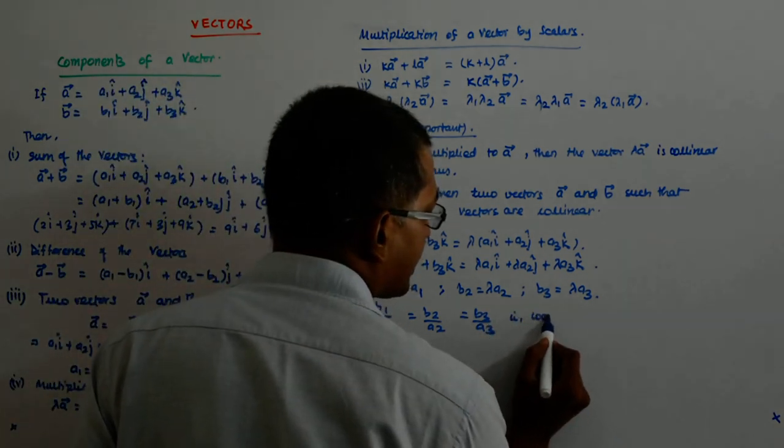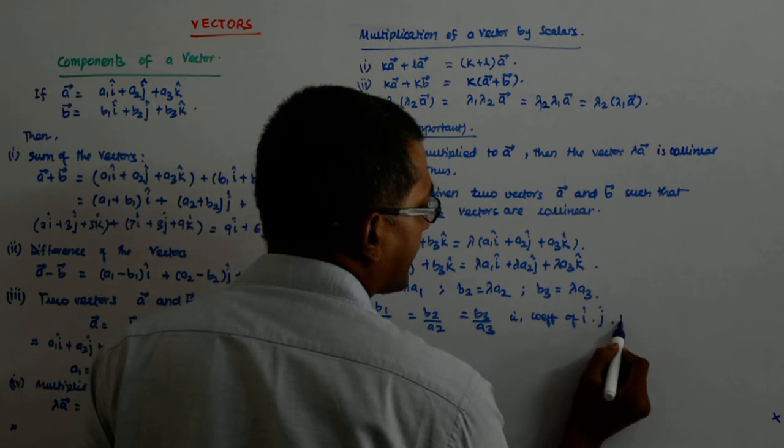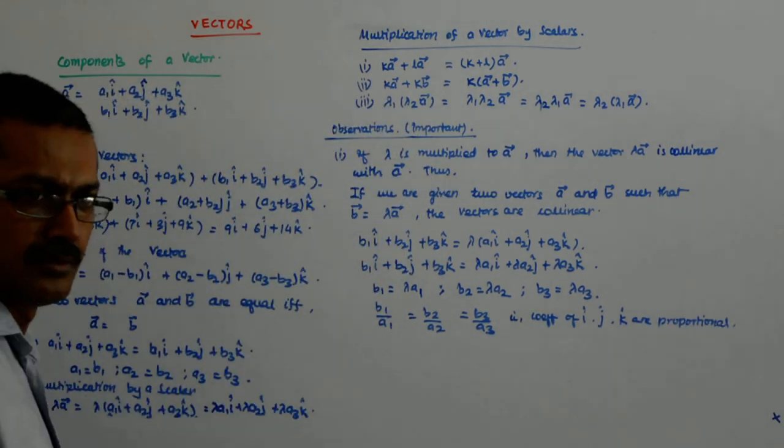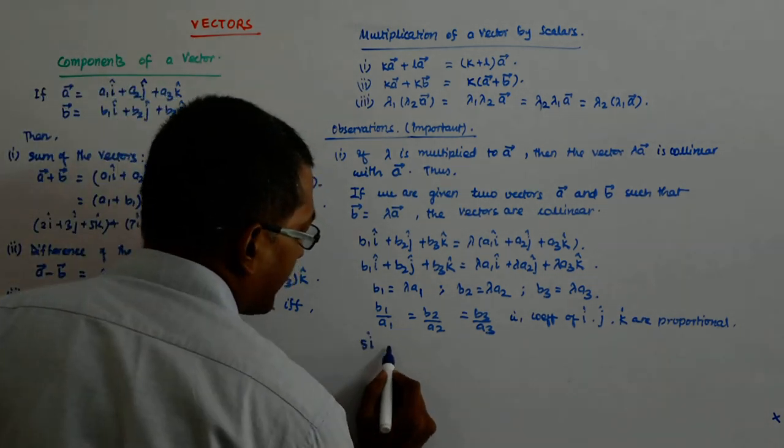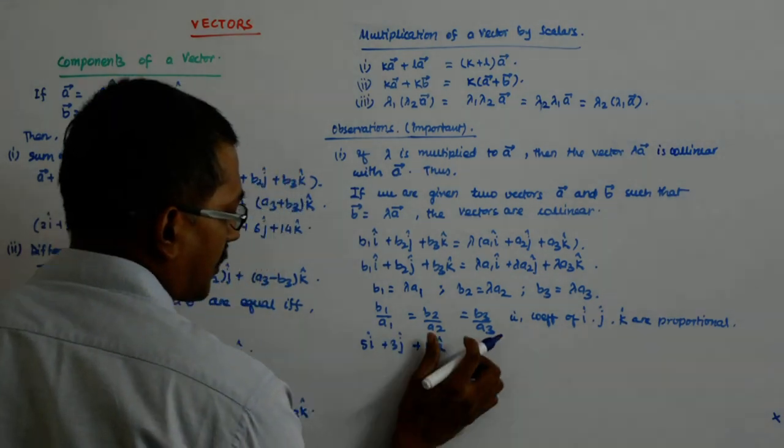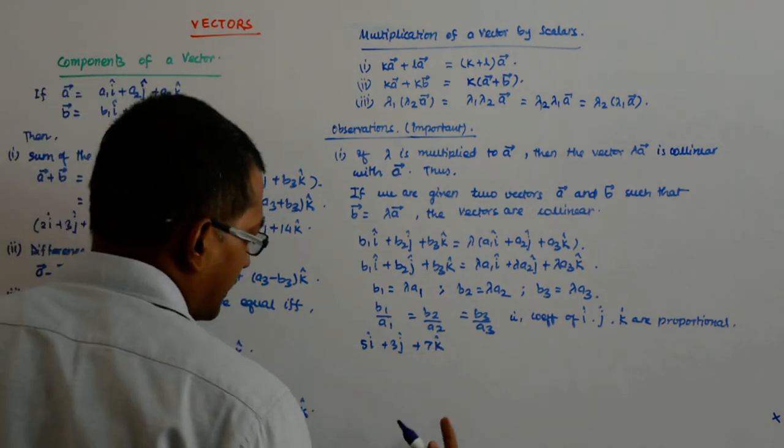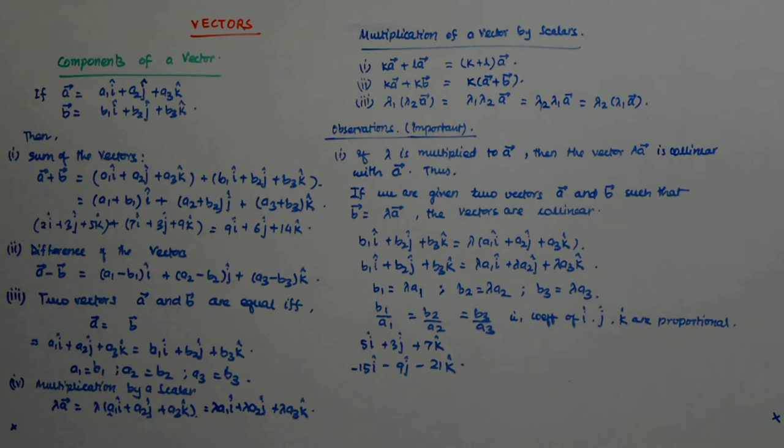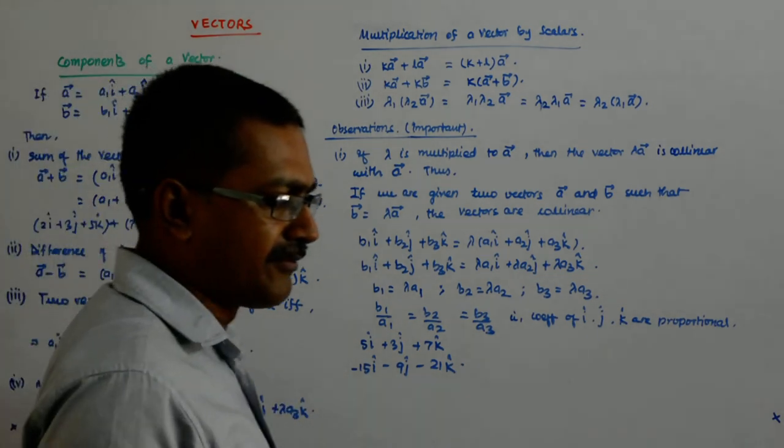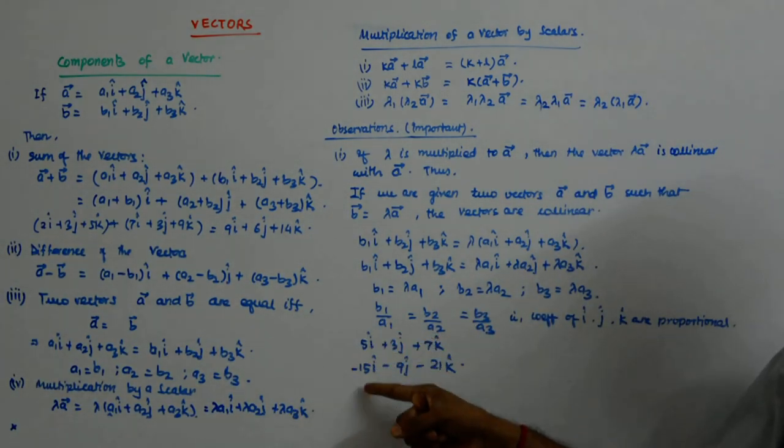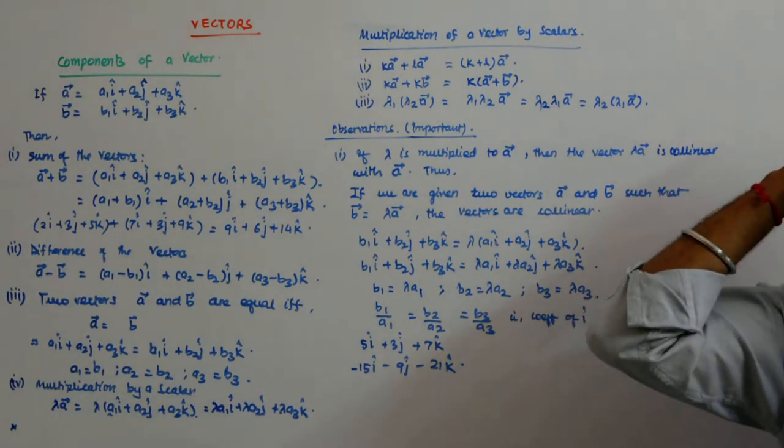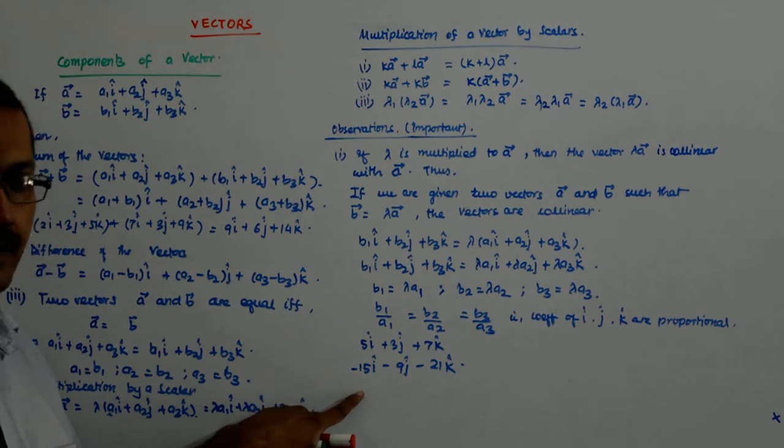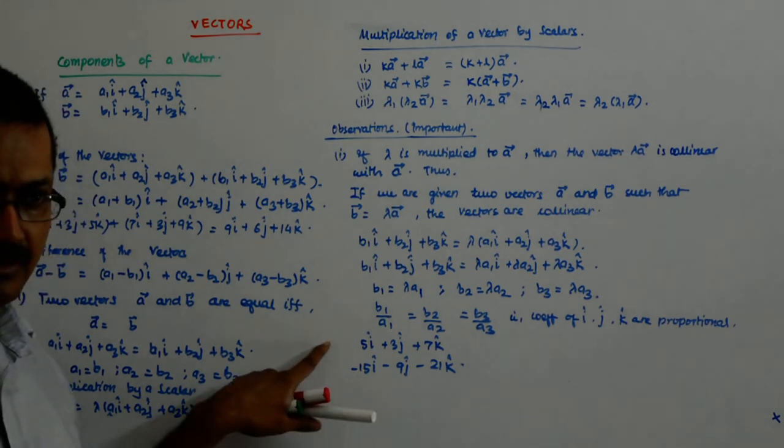That is, coefficients of i, j, k are proportional. What does it mean? It means that the moment I see 5i plus 3j plus 7k and I see another vector, minus 15i cap minus 9j cap minus 21k cap, every coefficient is multiplied by minus 3. So, they have to be collinear vectors.